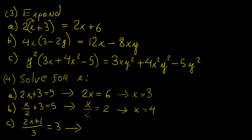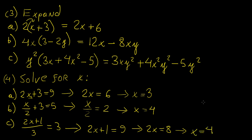Finally, we have an expression where all terms are divided by 3. We first multiply both sides by 3, giving 2x plus 1 equals 9. Then we subtract 1 from both sides to get 2x equals 8, and divide both sides by 2, so x equals 4. We check by substituting back: 2 times 4 is 8, plus 1 is 9, and 9 divided by 3 equals 3 — correct.